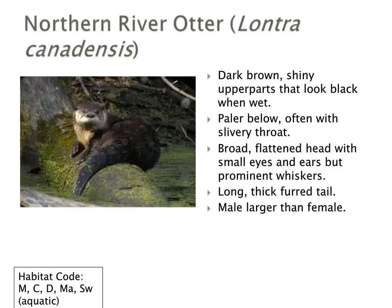The northern river otter is our most aquatic of the weasel family, with very dark brown shiny upper parts that look black when wet, paler below, and a slightly silvery or grizzled throat. It has a broad flattened head, prominent whiskers, collapsed ears for greater aerodynamics in the water, and a long thick-furred tail — all important for swimming in the aquatic environments it lives in.